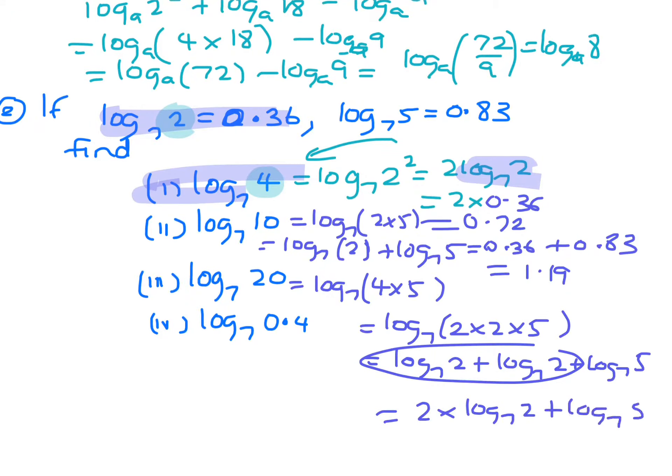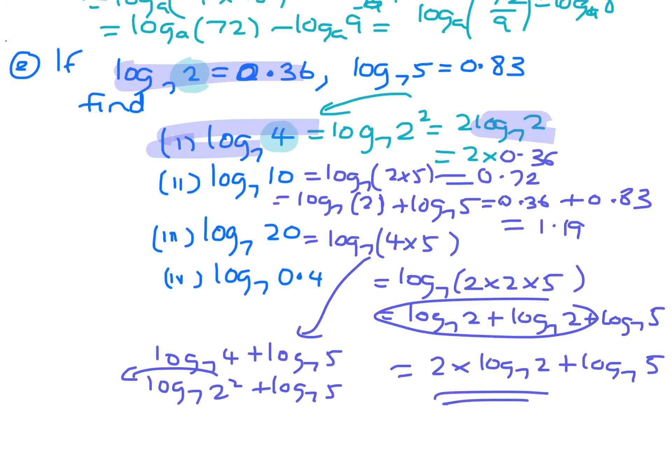Like you could have done it as log 7 4 plus log 7 5. And then you make that log 7 2 squared plus log 7 5, and bring the 2 down. So you get 2 lots of log 7 2. Okay, so log 7 2 is equal to 0.36, and log 7 5 is 0.83. And then you just put that in your calculator and then you evaluate it.